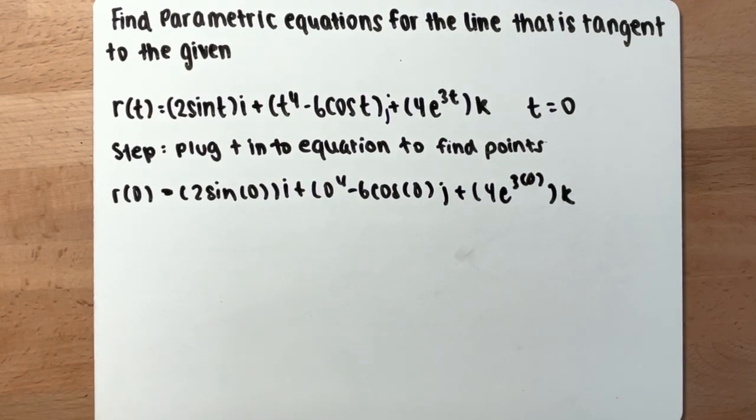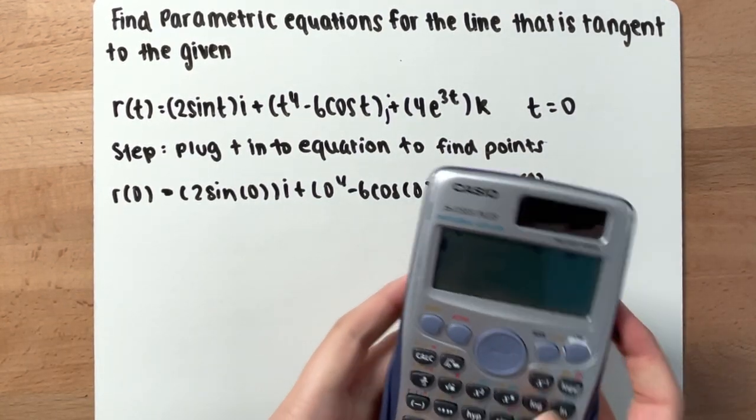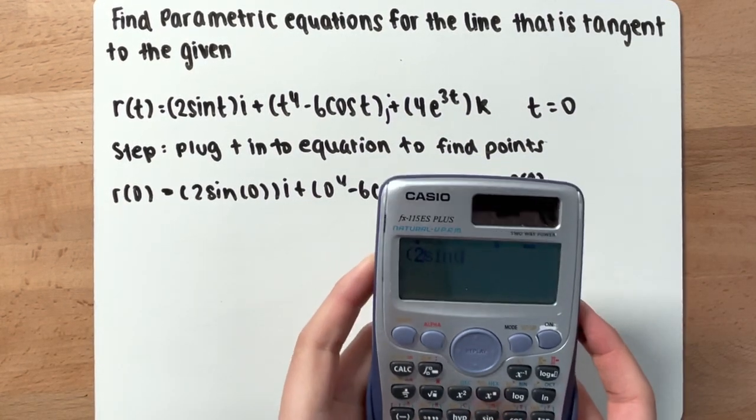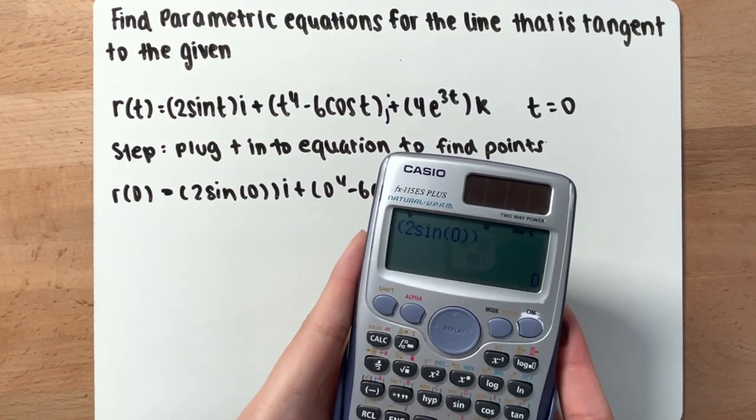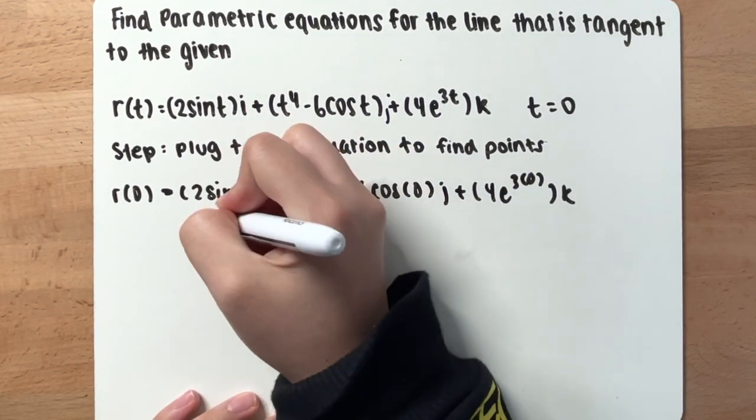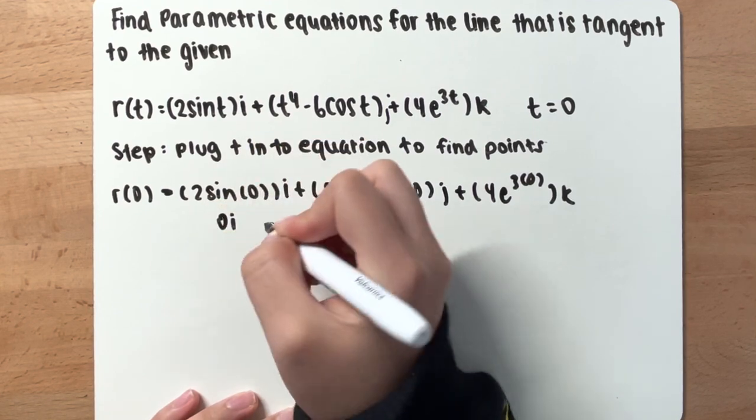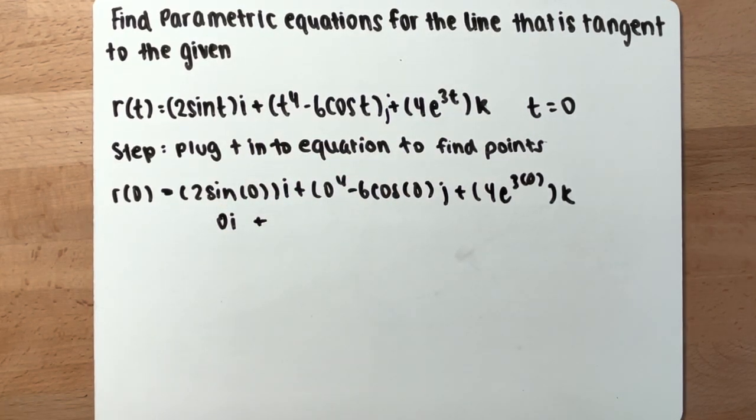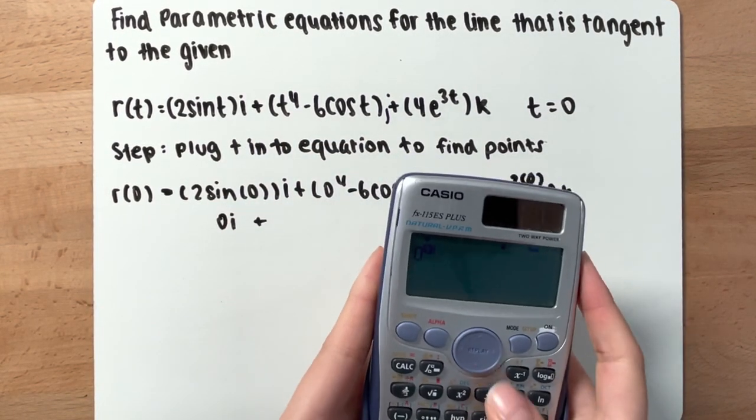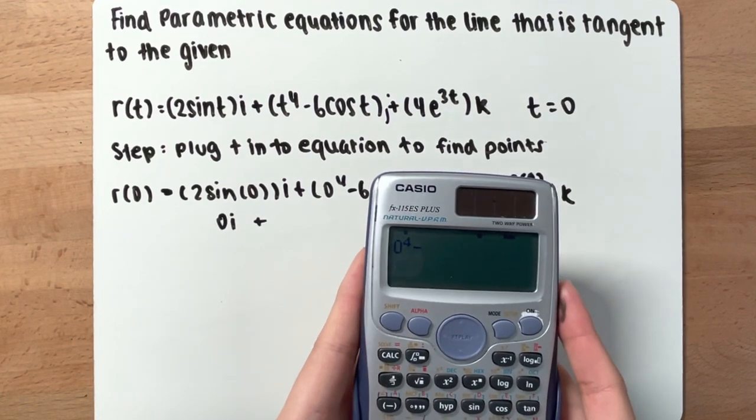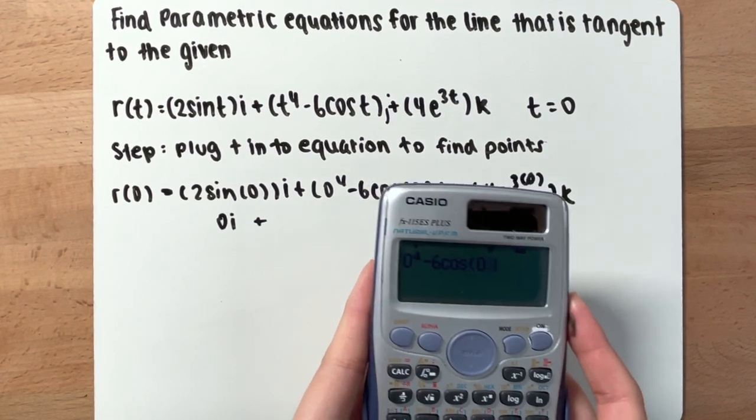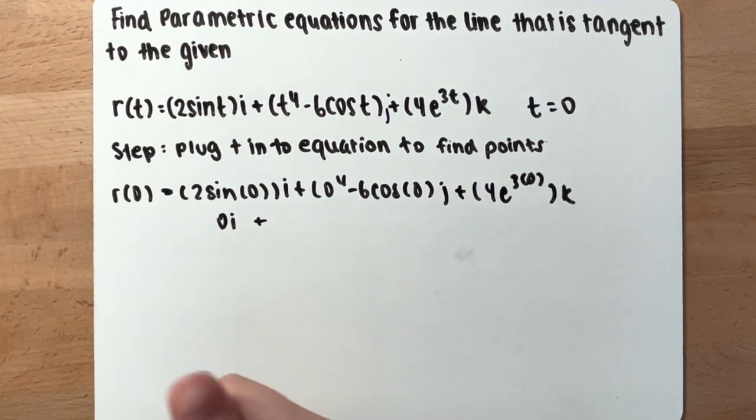Alright, now you plug it into a calculator, you got it. 2 sine 0, you have 0i, plus 4 minus 6 cosine 0, you have negative 6.